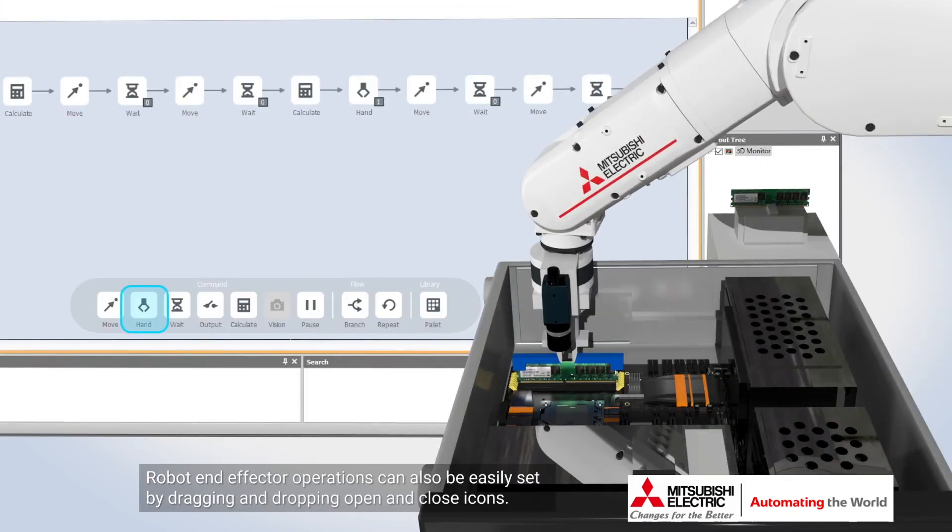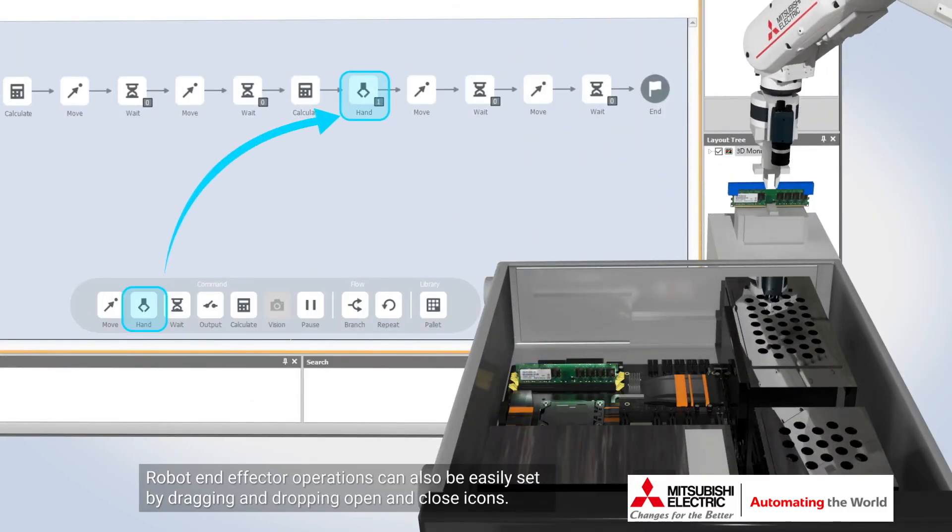Robot and effector operations can also be easily set by dragging and dropping open and close icons.